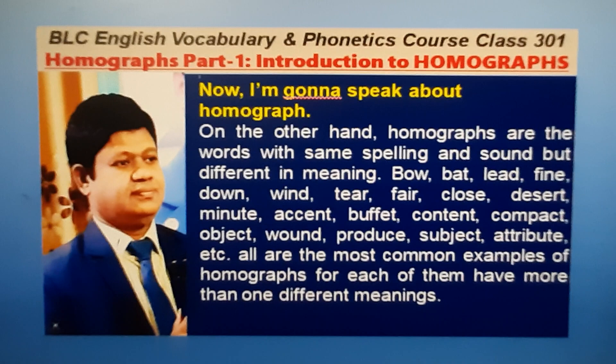On the other hand, homographs are words with the same spelling and sound but different in meaning. Bow, bat, lead, find, down, wind, tear, fear, close, desert, minute, accent, buffet, content, compact, object, wound, produce, subject, attribute, etc. — all are the most common examples of homographs, for each of them has more than one different meaning.